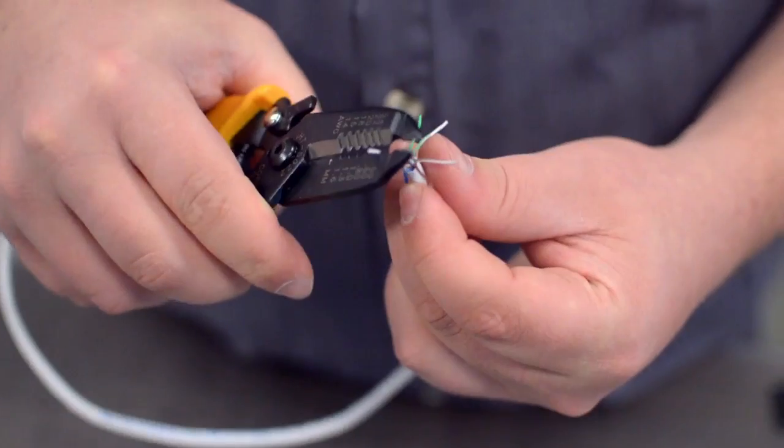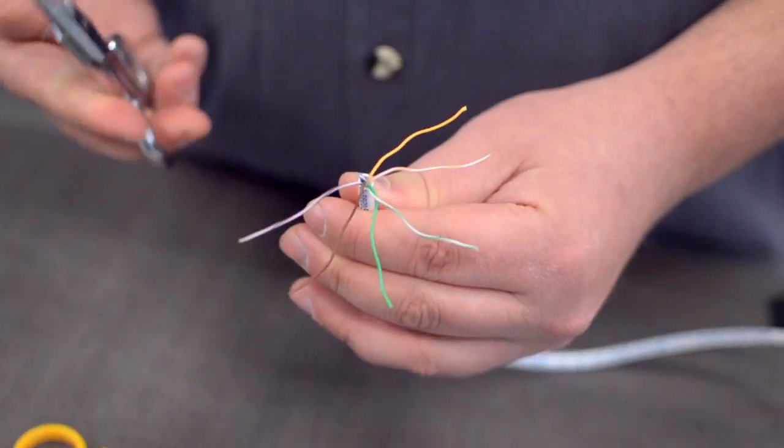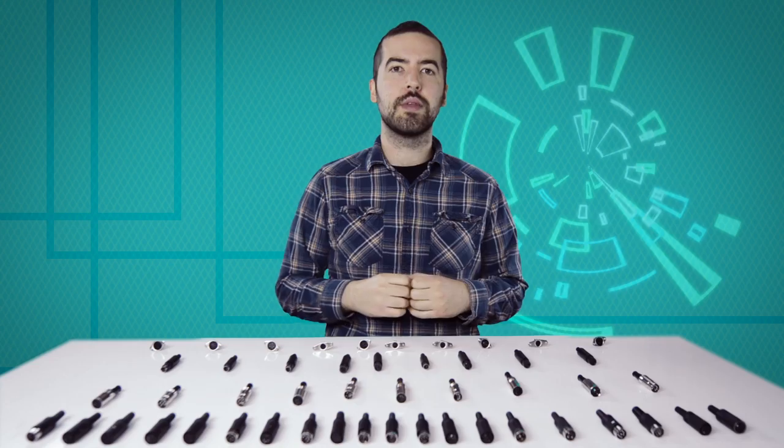You will also need to strip the individual conductors. Trim off any additional conductors if needed. Now comes the hard part: soldering.